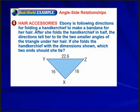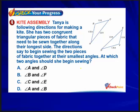Ebony is folding a handkerchief to make a bandana. After folding it in half, the directions say to tie the two smaller angles of the triangle under her hair. The two smaller sides are identified, and we choose the angles opposite those smaller sides — going all the way across the triangle. The two angles she should tie are Y and Z.